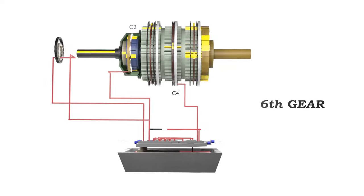For reverse we must engage C3 and C5. Both C2 and C4 will disengage and exhaust from shift valve 2. Also notice that reverse will disengage the torque converter clutch. To engage C3 and C5, the main line passes through trim A to shift valve 2. C3 and C5 are now engaged — we have reverse.